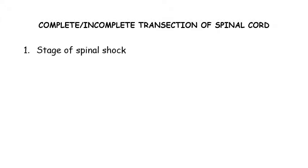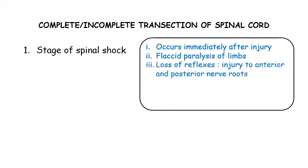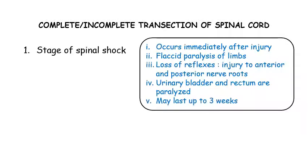There are three stages of spinal cord damage. The first stage, the stage of spinal shock, appears immediately after injury, characterized by flaccid paralysis of the limbs, loss of reflexes, and paralysis of the urinary bladder and rectum. This stage may last up to three weeks.